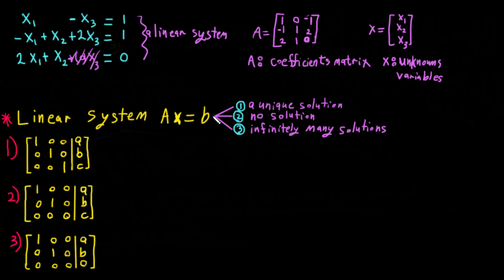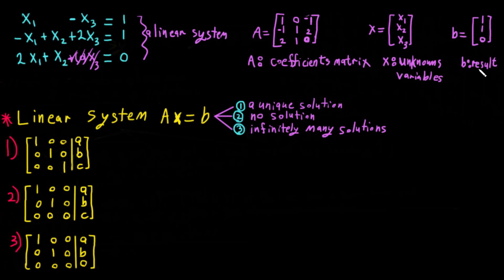What is B? B is of course the result — the answer of the system. So B equals the vector: one, one, zero. B is the result or answer of the system.